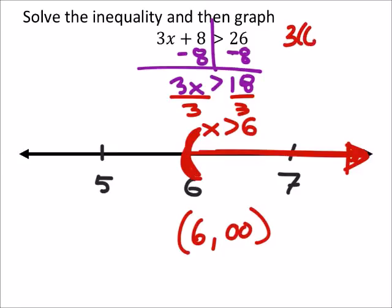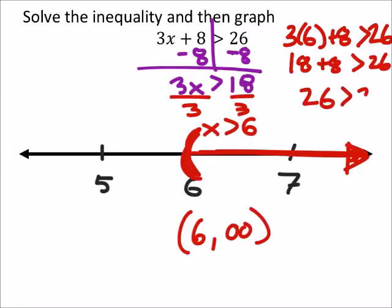So for example, if I do 3 times 6 plus 8, the statement is that this has to be greater than 26, right? Well, this would give me 18 plus 8 is greater than 26. And so I get 26 is greater than 26. This right here is a false statement.